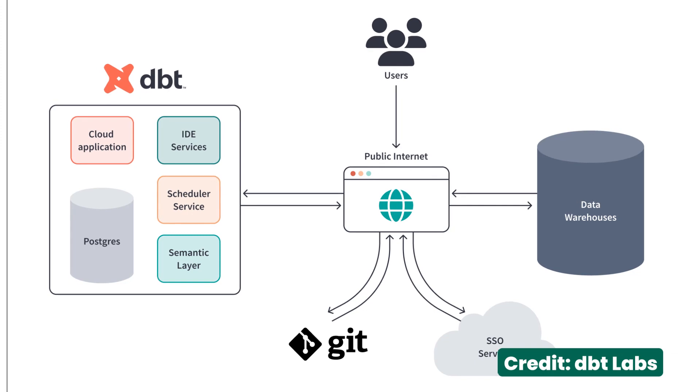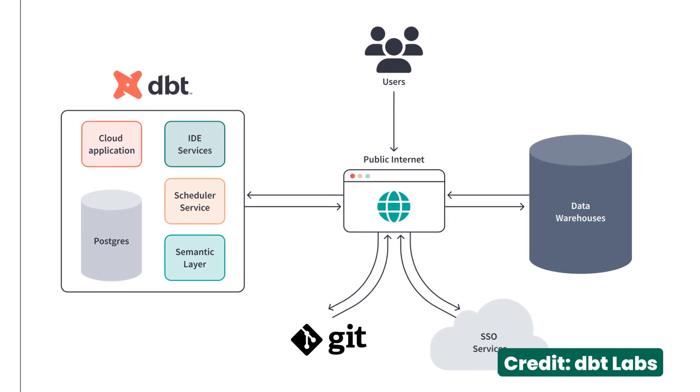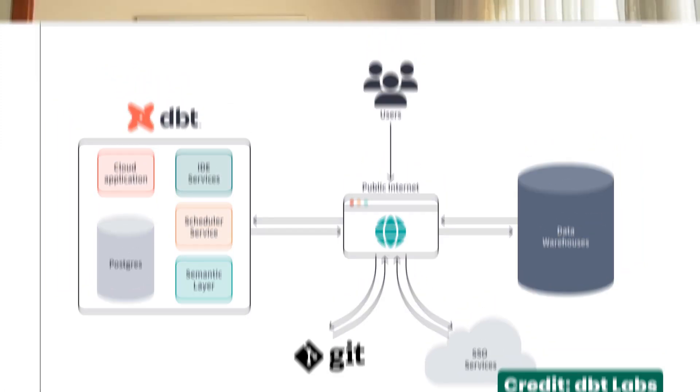Open sourcing it was sort of a no-brainer at the time. But later on, as DBT became a venture-funded business, they stuck with their initial premise of keeping the core product open source. They ended up building a great cloud product on top, which has a code editor for data analysts and a lot of out-of-the-box orchestration features — and they're adding more capabilities to it. The core of the product is open source, which means a large population of people could adopt it without paying anything just to get started.